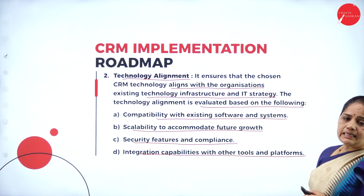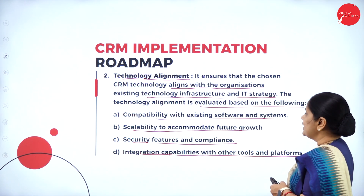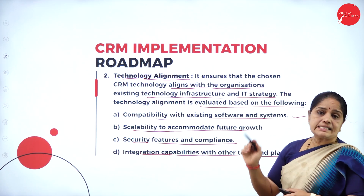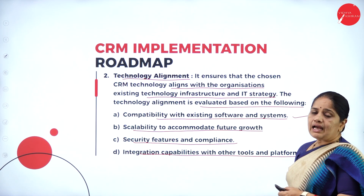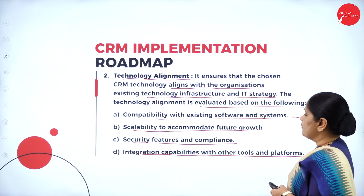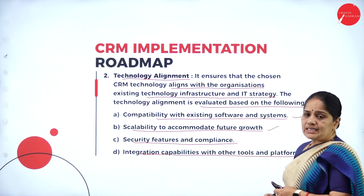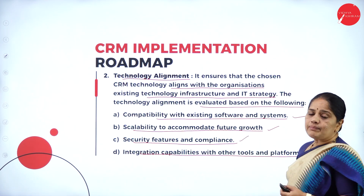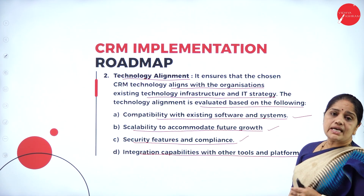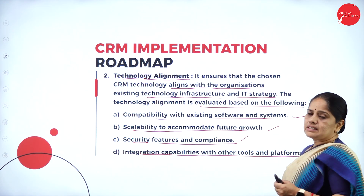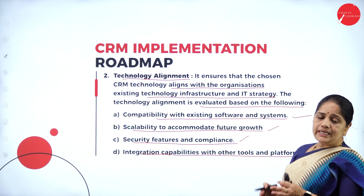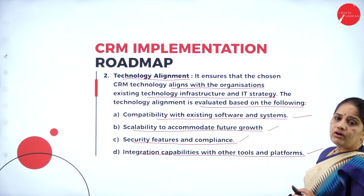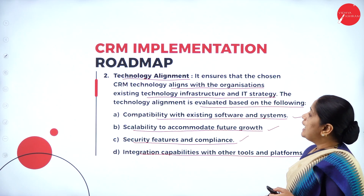When deciding on the technology to adopt, first you have to see compatibility with the existing software system — whether it can adapt easily. Then scalability: can it handle more and more data as data grows? Then security features — what about the security of collected data? And integration capacities — can it switch from one channel to another seamlessly? These are the things to think about before deciding on technology alignment.